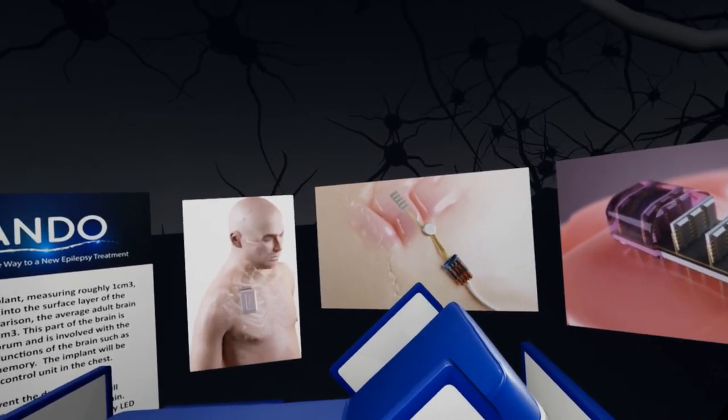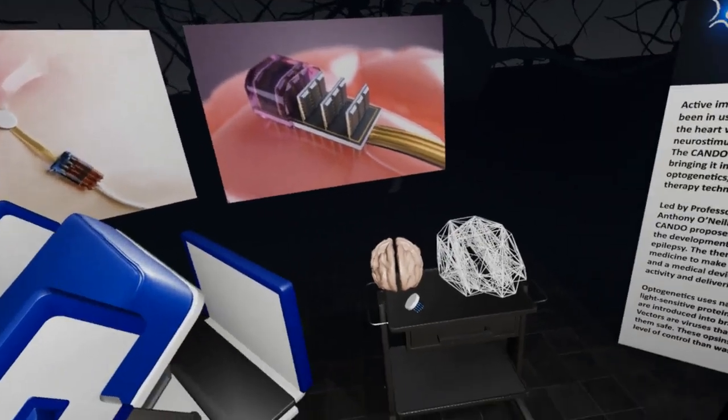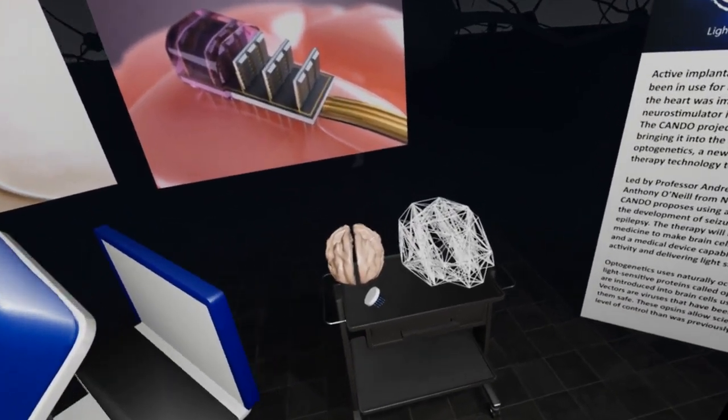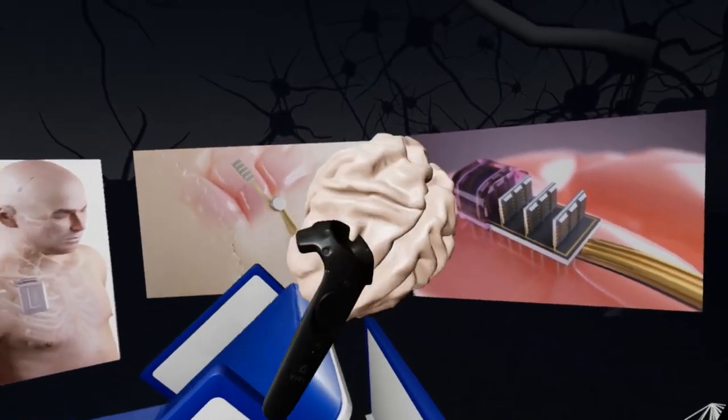For comparison, the average adult brain is around 1200 cubic centimeters. This part of the brain is called the cerebrum, and is involved with more complex functions such as language and memory.